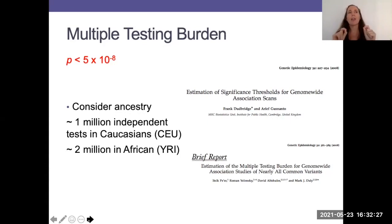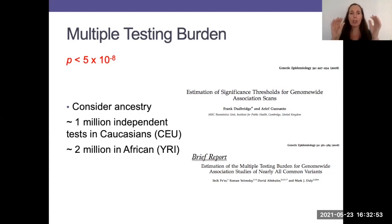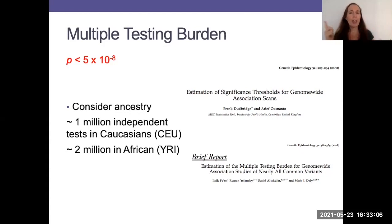But that threshold is ancestry specific. Linkage disequilibrium means you have more correlated SNPs in Europeans than you do in Africans, for example. If you're looking at an African sample — and I believe this came from the HapMap project — then the estimation is perhaps two million independent SNPs. So consider the ancestry of your sample, look at how much correlation there is among those genetic variants you're testing, and apply the appropriate significance threshold. The standard genome-wide association significance threshold applied is based on a Caucasian sample.